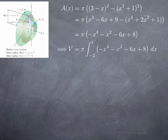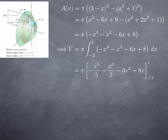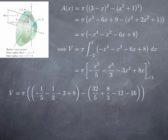The volume is obtained by integrating this cross-section function over the interval [−2, 1], since the range of x values for this region is from −2 to 1. This is a polynomial, so it's easy to integrate. An antiderivative of −x⁴ − x² − 6x + 8 is −x⁵/5 − x³/3 − 3x² + 8x. Evaluating between −2 and 1, after simplification we get 117π/5.